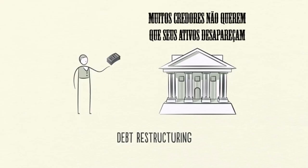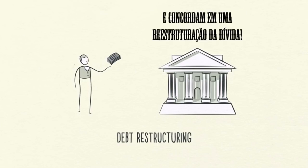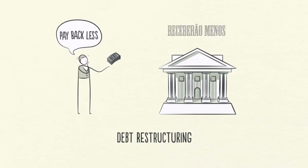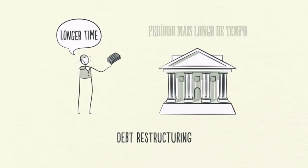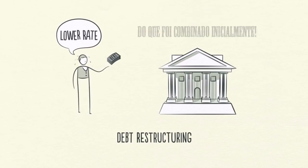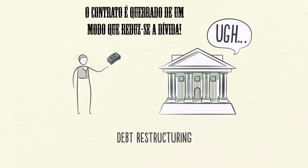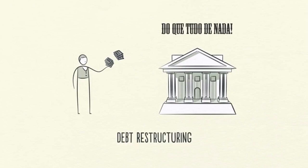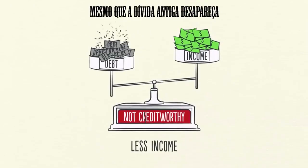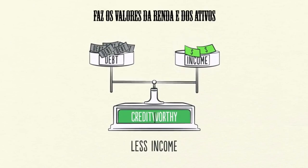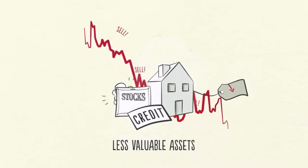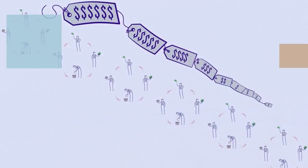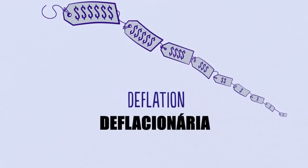Many lenders don't want their assets to disappear and agree to debt restructuring. Debt restructuring means lenders get paid back less, or get paid back over a longer time frame, or at a lower interest rate than was first agreed — somehow a contract is broken in a way that reduces debt. Lenders would rather have a little of something than all of nothing. Even though debt disappears, debt restructuring causes income and asset values to disappear faster, so the debt burden continues to get worse. Like cutting spending, debt reduction is also painful and deflationary.